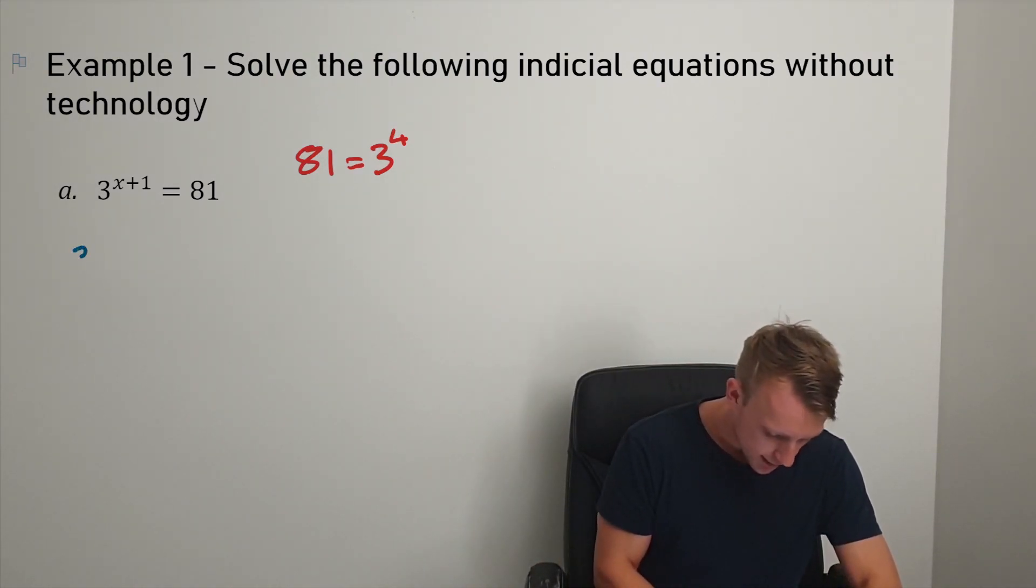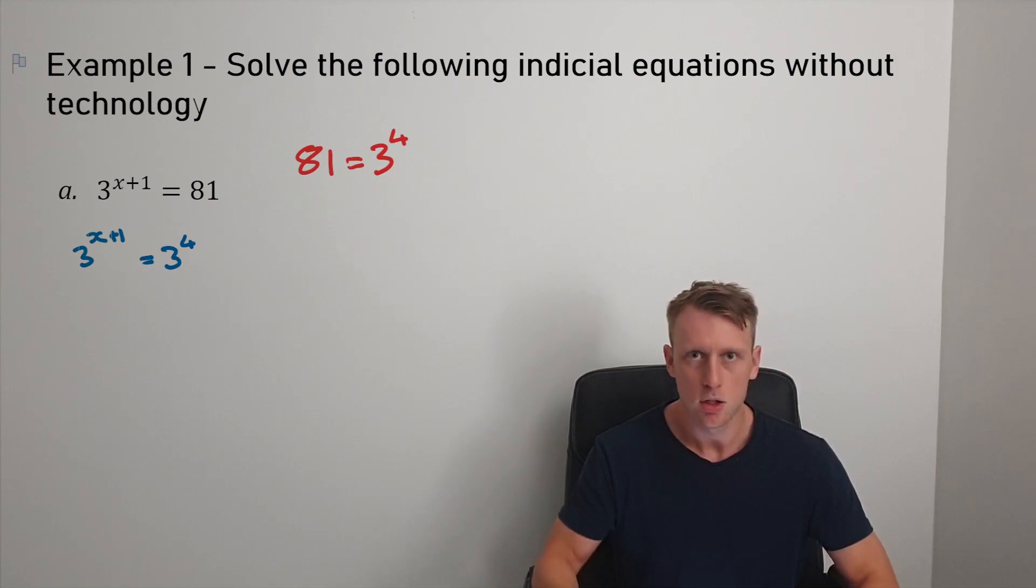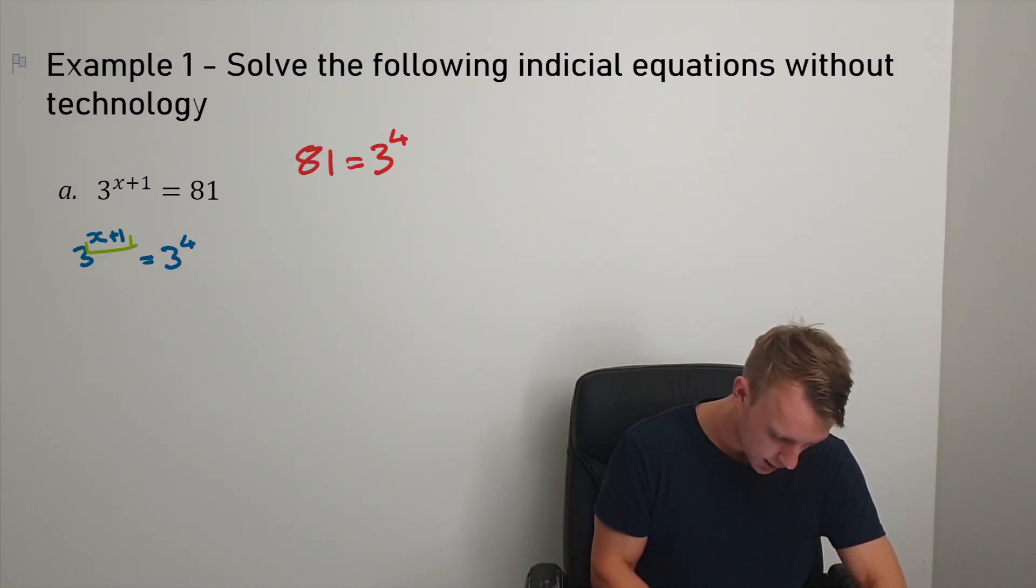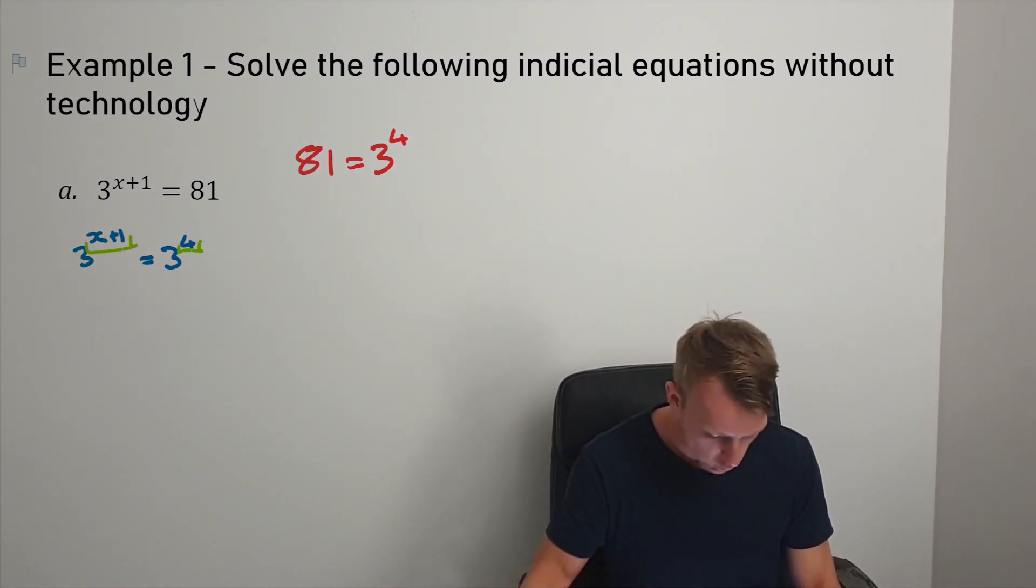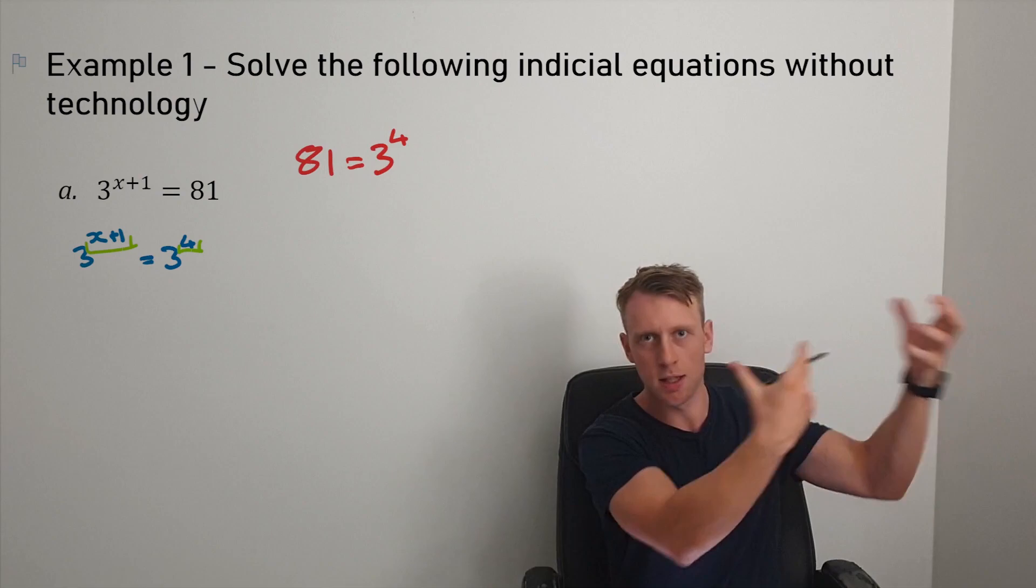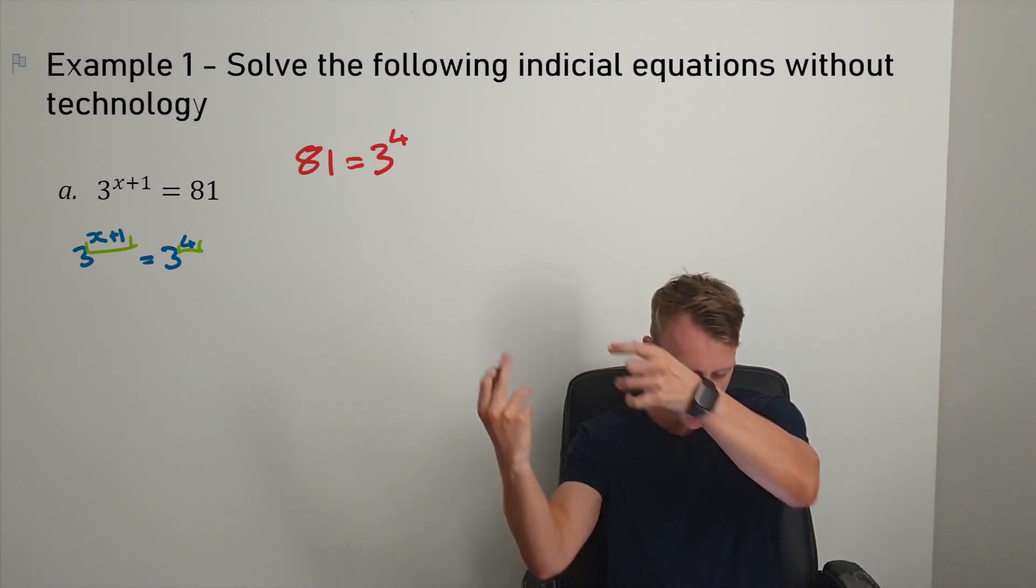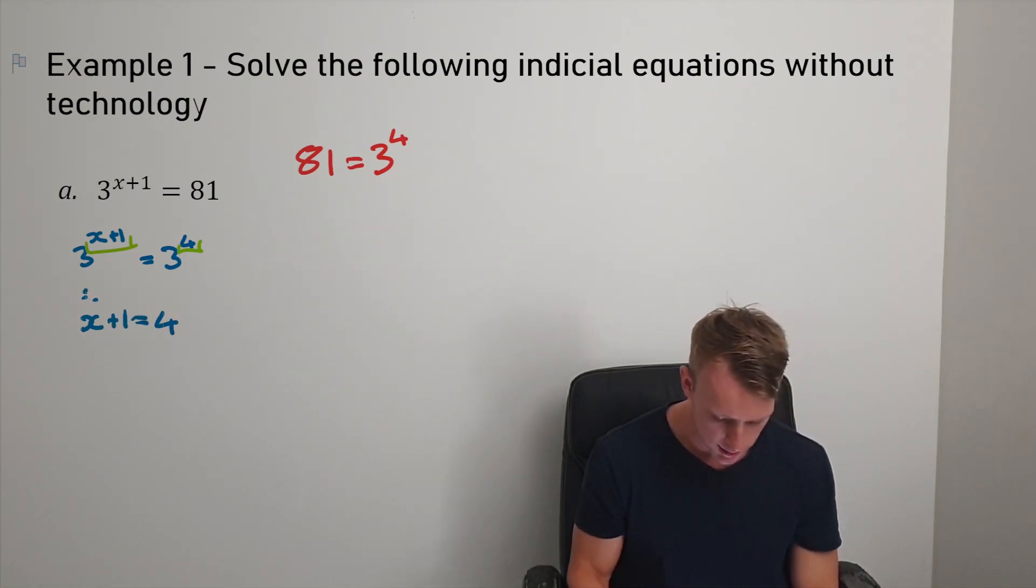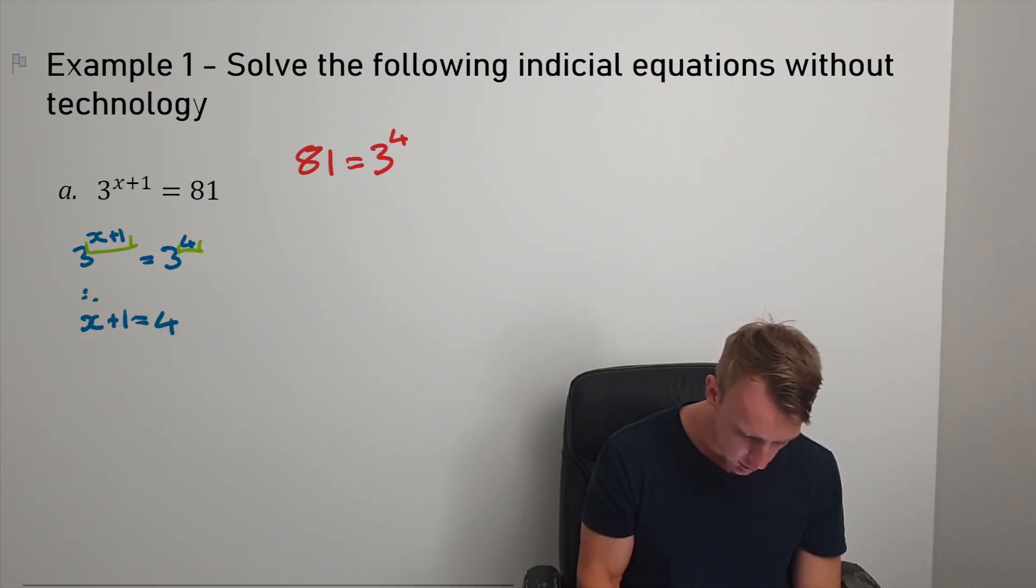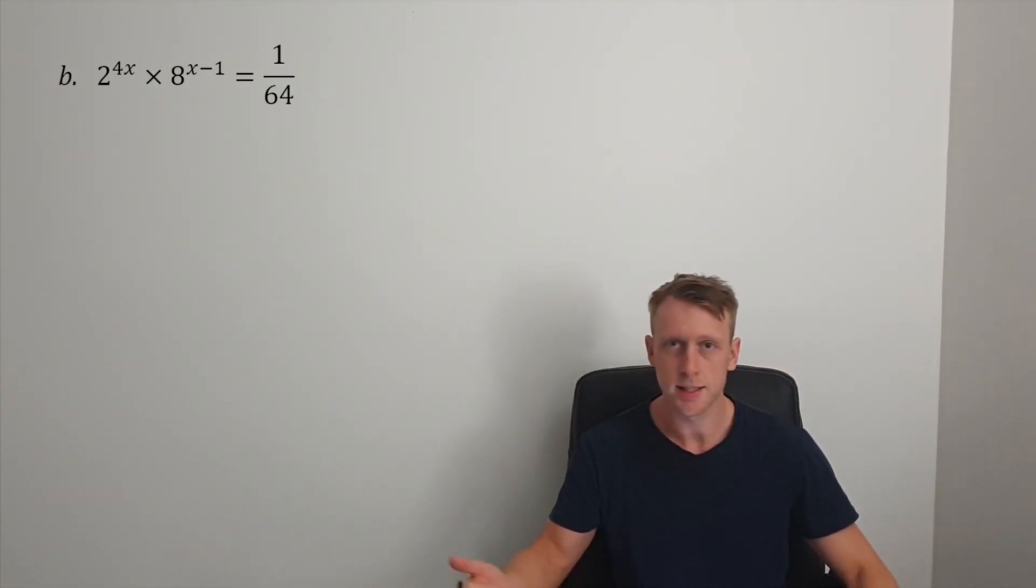When you write it out like this, 3^(x+1) equals not 81 but 3 to the power of 4, just by deduction you can say x+1 has to be the same as 4, because 3 to the power of this is equal to 3 to the power of that. Therefore, x+1 equals 4, so x equals 3.